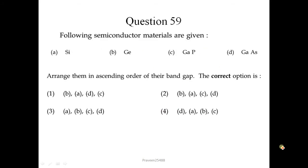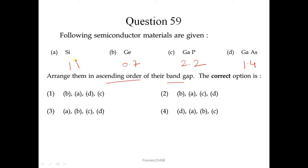Question number 59. Following semiconductor materials are given: silicon, germanium, gallium phosphide, and gallium arsenide. Arrange them in ascending order of their band gap. The band gap of silicon is 1.1 eV, germanium is 0.7 eV, gallium phosphide is 2.2 eV, and gallium arsenide is 1.4 eV at 300 Kelvin. So the correct sequence is B, A, D, C — the first option is the correct answer.